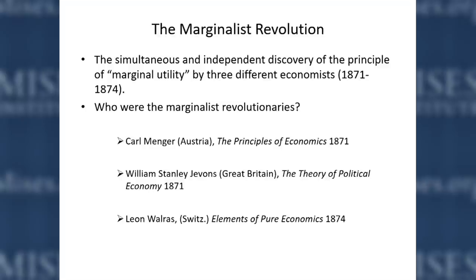The conventional story goes that there were three economists in different countries at about the same time who discovered the law of marginal utility, and this ushered in the age of modern economics. Well, that's true, but it's not quite true. There was a big difference between the way these three economists viewed the law of marginal utility. This intellectual change in economics was known as the Marginalist Revolution. Karl Menger from Austria in 1871, William Stanley Jevons from Great Britain, also in 1871.